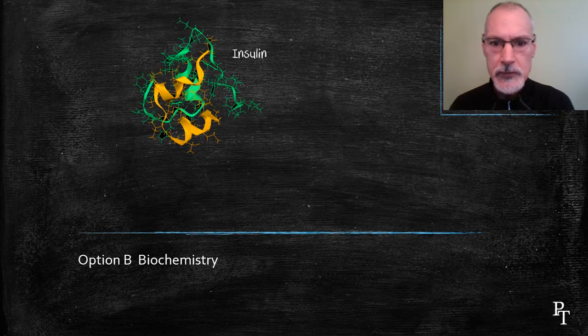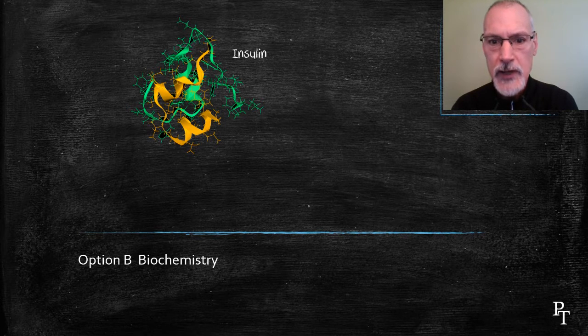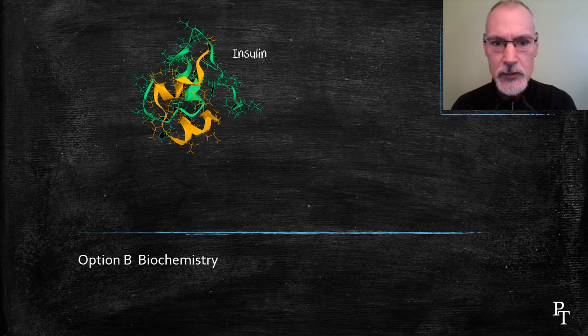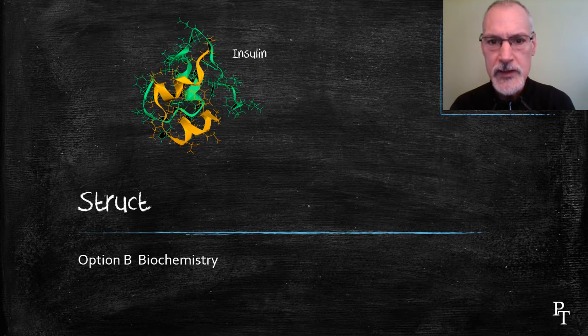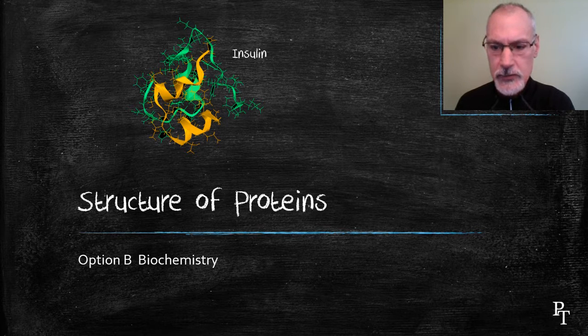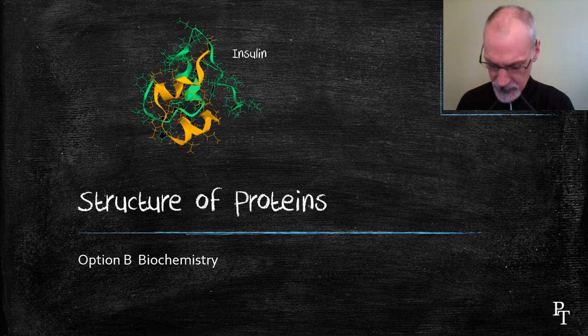It is believed that many of these proteins act the way they do because of how they're arranged, how they're put together, not just necessarily the sequence of amino acids, but how they're arranged in three dimensions. This program is going to take a look at that. We call it the structure or levels of organization of a protein.